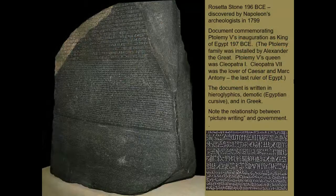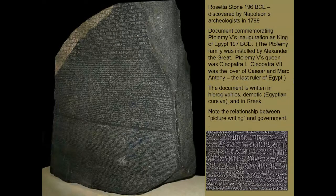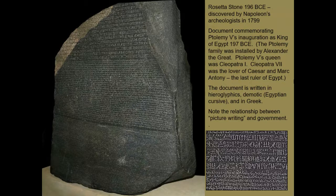The reason we are able to translate and understand much of Egyptian history is because of the discovery in 1799 of this remarkable object: the Rosetta Stone. The Rosetta Stone is essentially a historical record of the absorption of Egypt into Greco power under the soldier Ptolemy, who served under Alexander the Great.